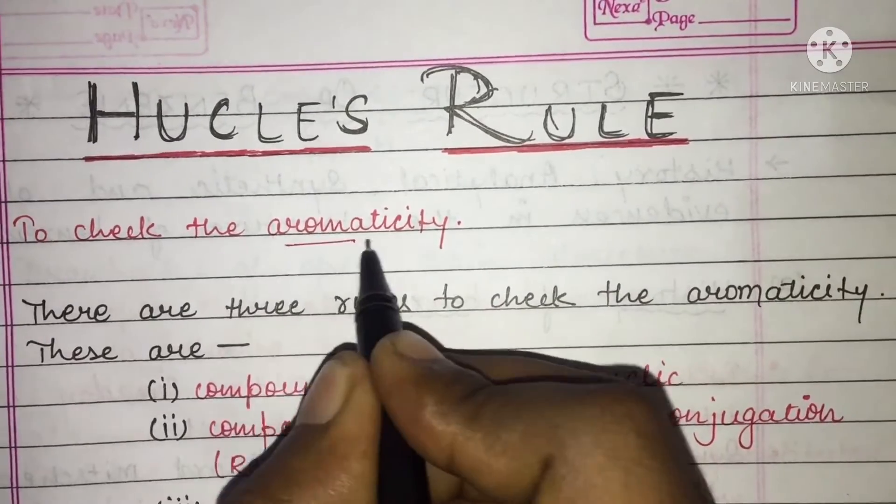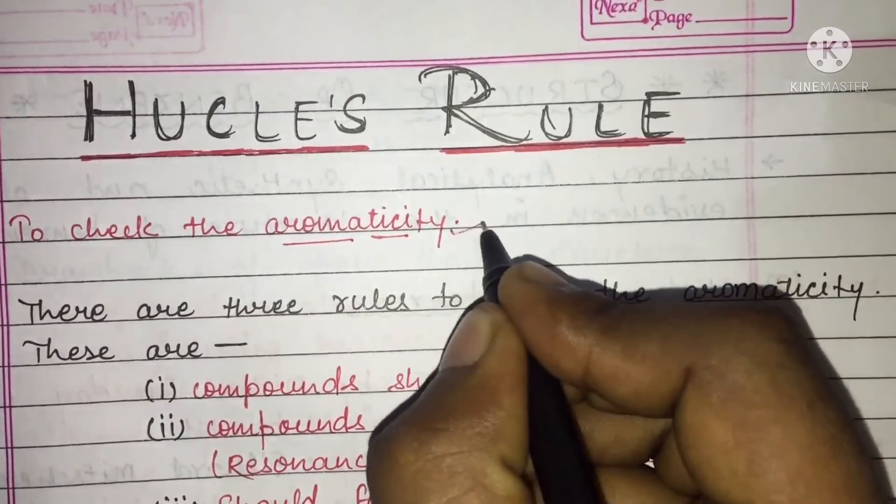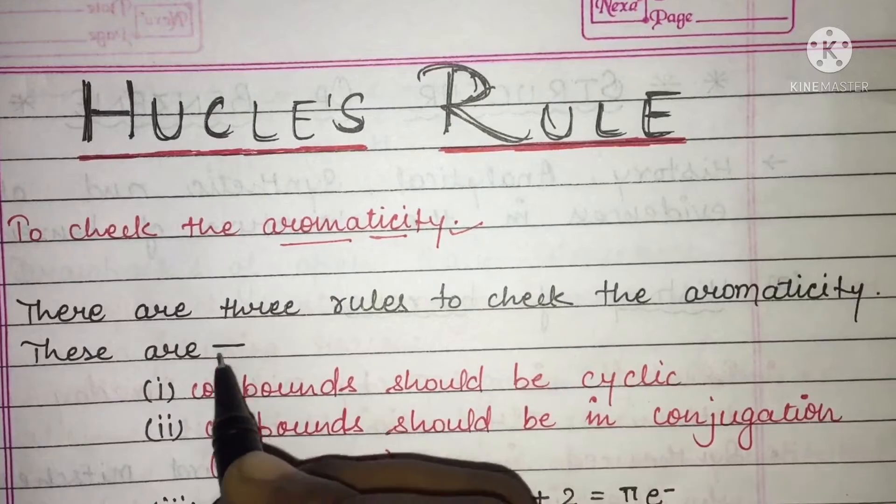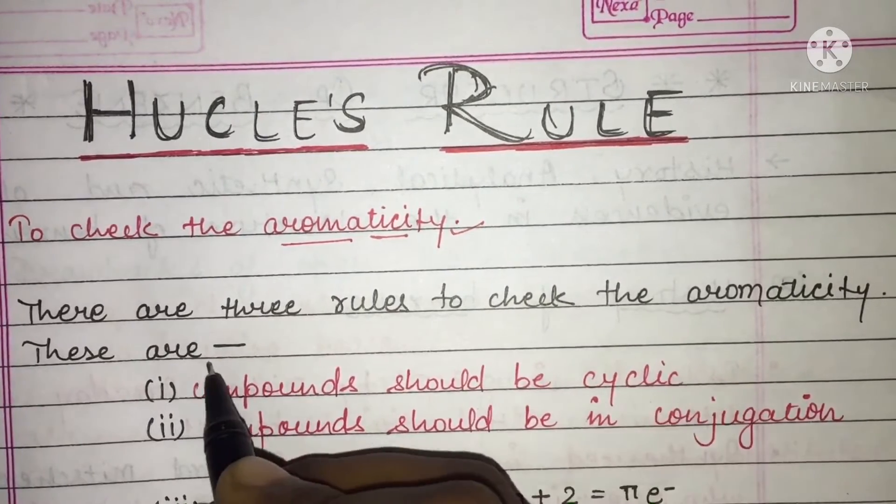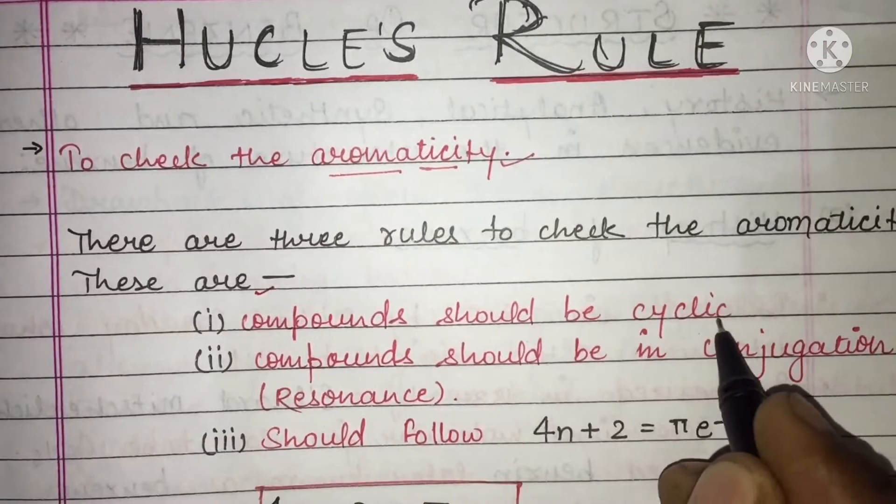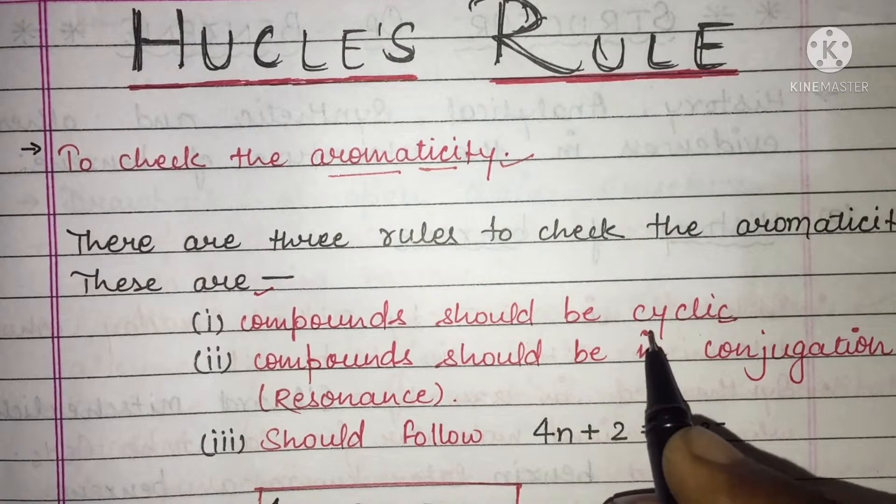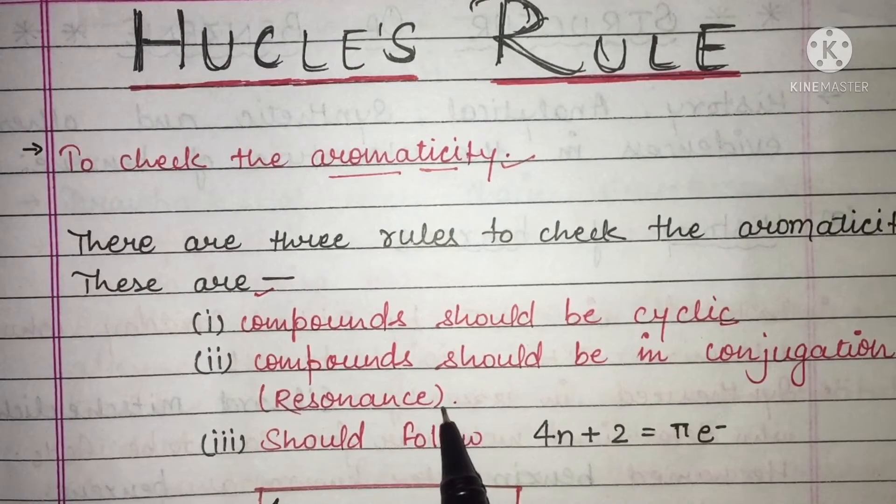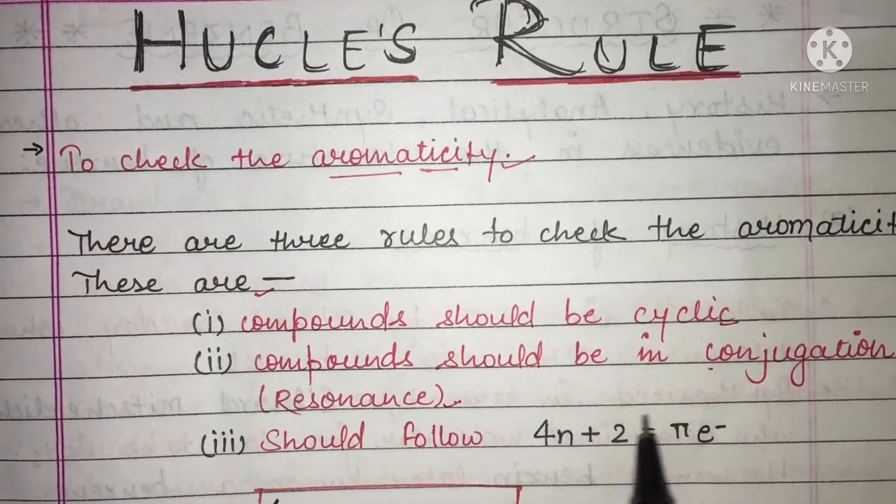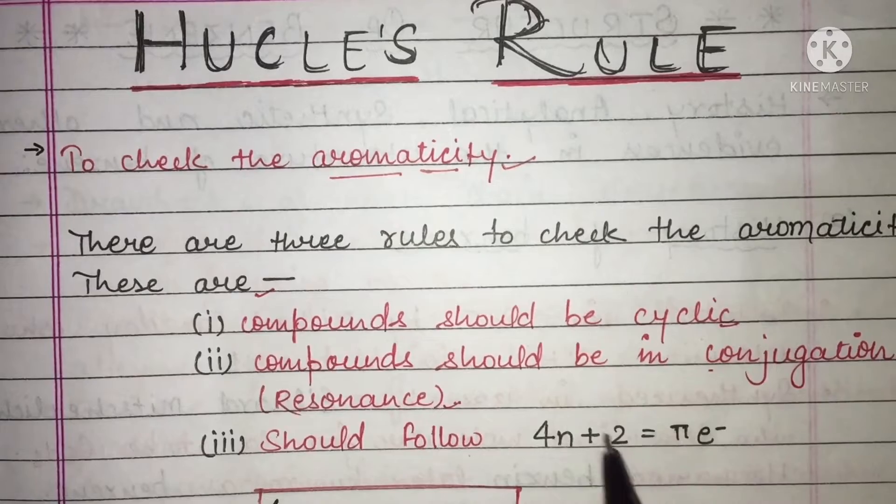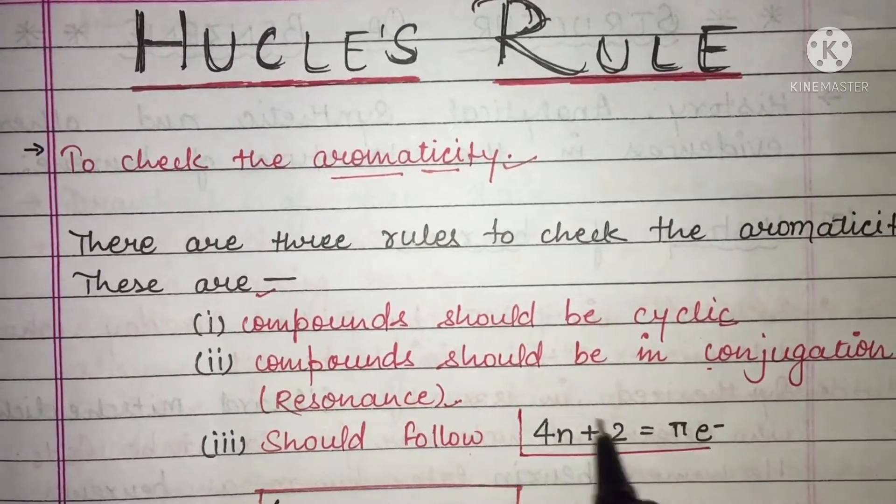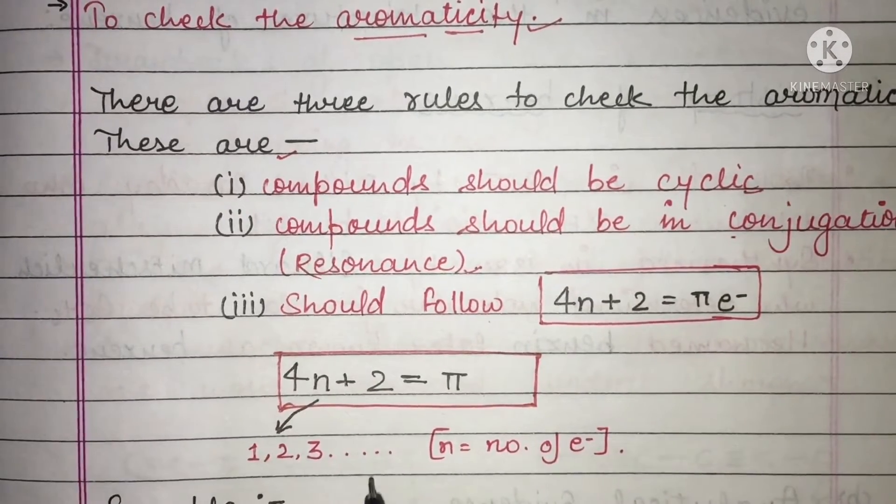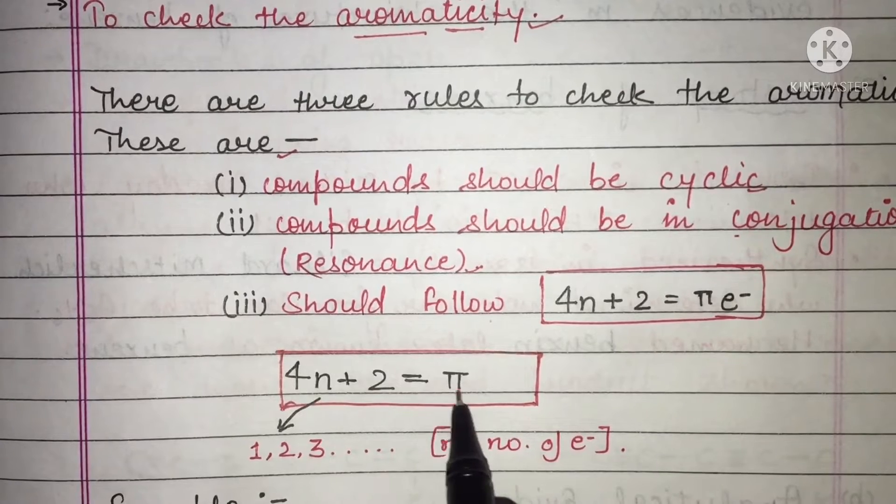To check the aromaticity of any ring structure or benzene or benzene-like structures, there are three rules to check the aromaticity. These are: first, compounds should be cyclic. Second, the compound should be in conjugation or resonance. And third, should follow this formula: 4n+2 is equal to π electrons.